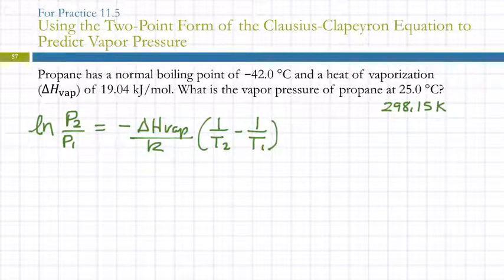So 25 is going to end up being 298.15 Kelvin, and minus 42, we'll take 273.15, subtract 42, and that's going to give us 231.15 Kelvin. Here's our delta H. We know what R is, although R is looking a bit like a K. That's confusing. Let's fix that.